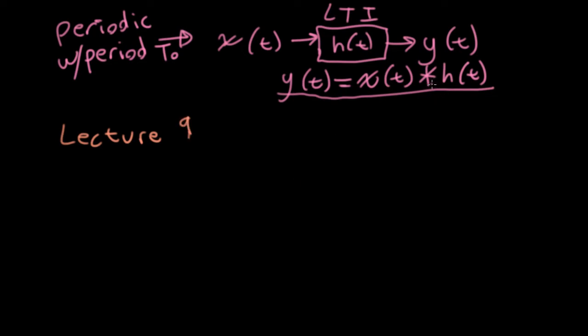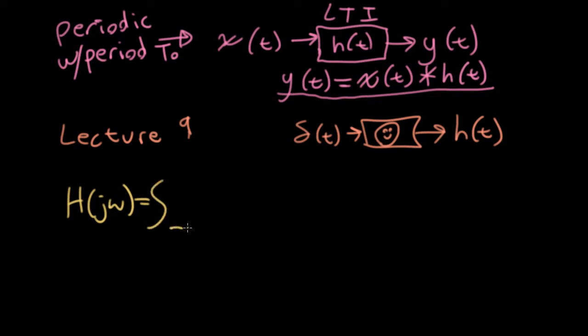In addition to talking about the impulse response, where we take an impulse, put it into the system, and we get the impulse response back, we talked about the idea of a frequency response. We could compute the frequency response of a system by integrating the impulse response against e^(-jωt) dt. Not coincidentally, this looks like a Fourier transform, which we'll discuss in more detail in the next lecture.